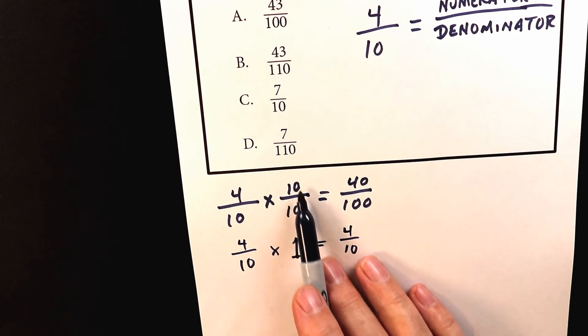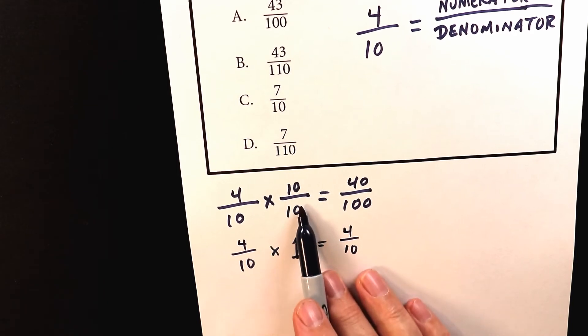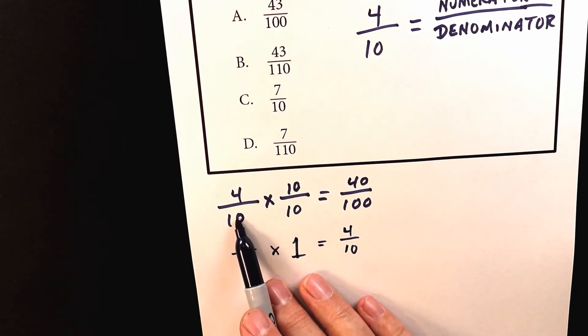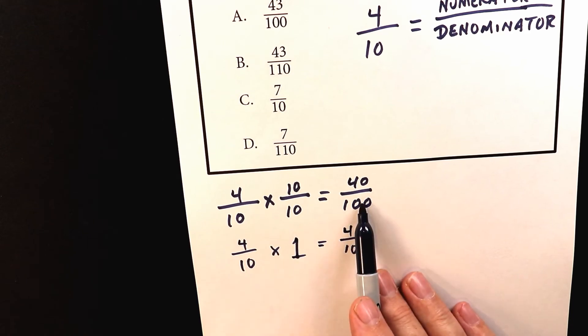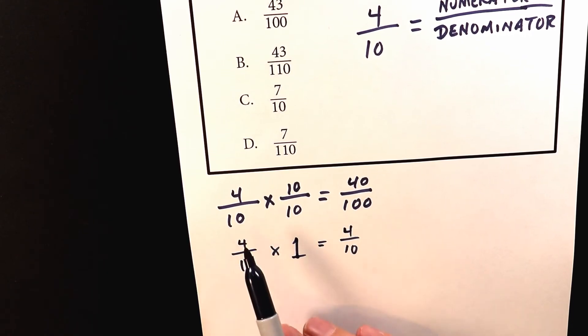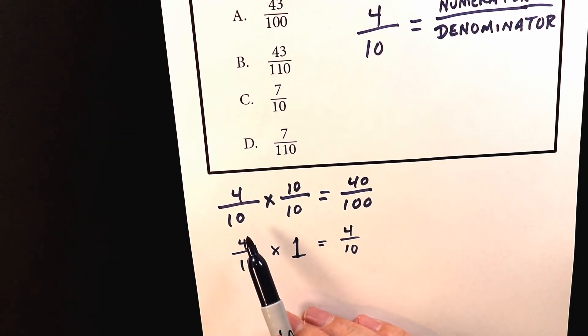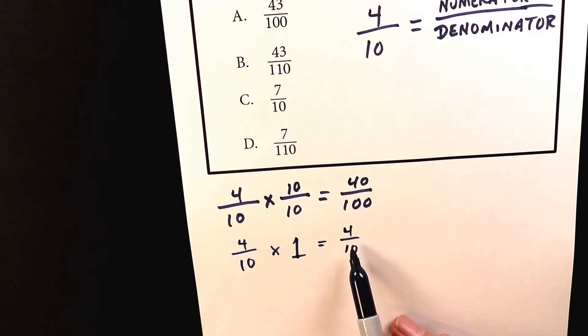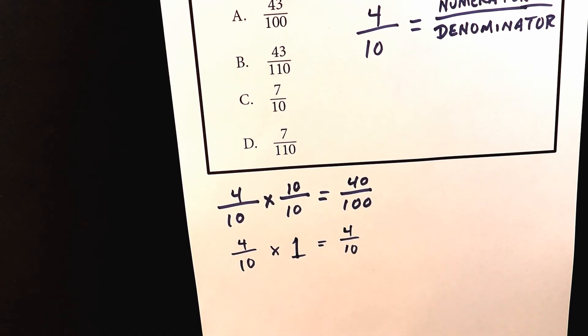But now I said to you earlier that this is also equal to 1. So this equals this. So it's just one of those things. They call that the identity property. If you multiply a number by 1 it stays the same. So this is the same as this.